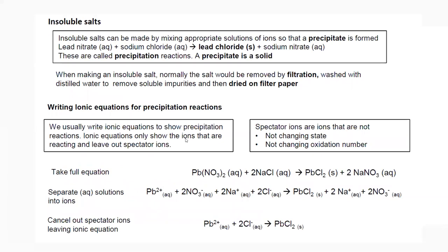To prepare insoluble salts, we use ionic precipitation — mixing two solutions forms a solid precipitate. For example, mixing aqueous lead nitrate with sodium chloride gives lead chloride (precipitate) plus sodium nitrate. Solubility rules: all nitrates are soluble; most chlorides are soluble except silver, mercury, and lead.